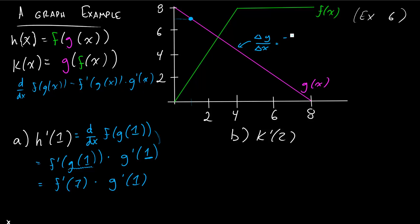And that's going to give you negative 8 over 8, which is negative 1. So the slope of g at 1 is negative 1.